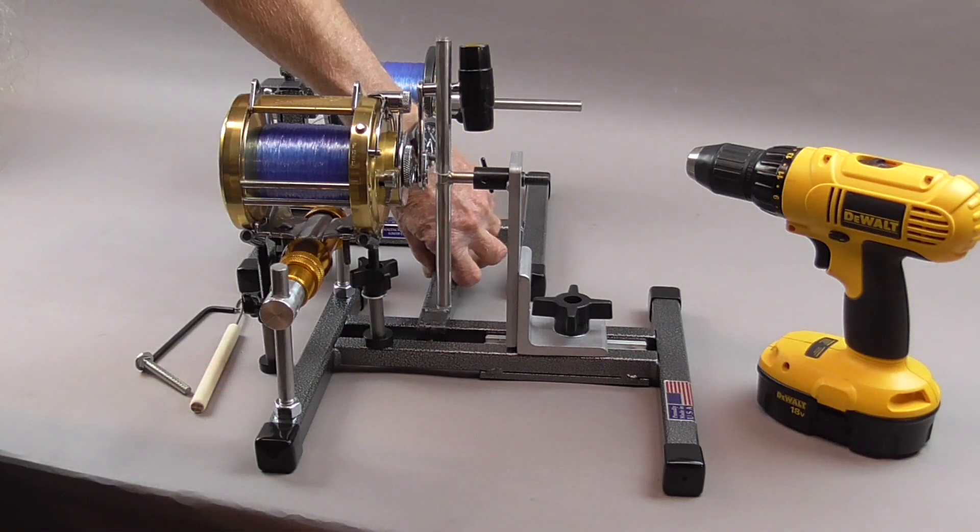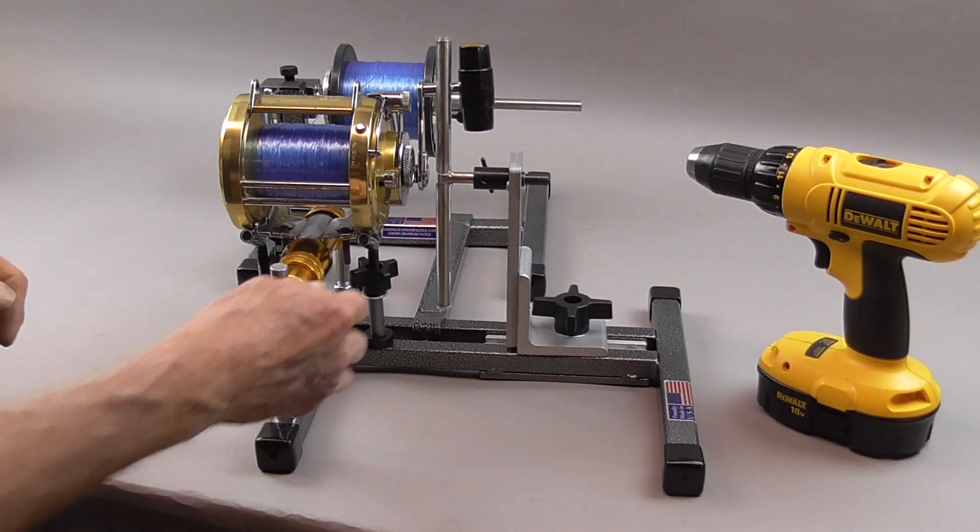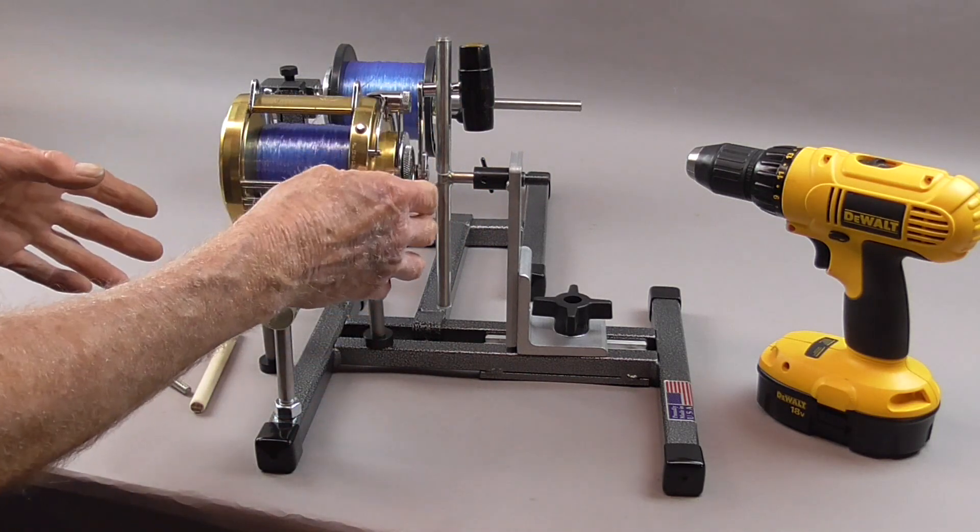Tighten that down. Then when you're cranking, you'll notice sometimes with bigger reels and more tension you'll get a little wobble.